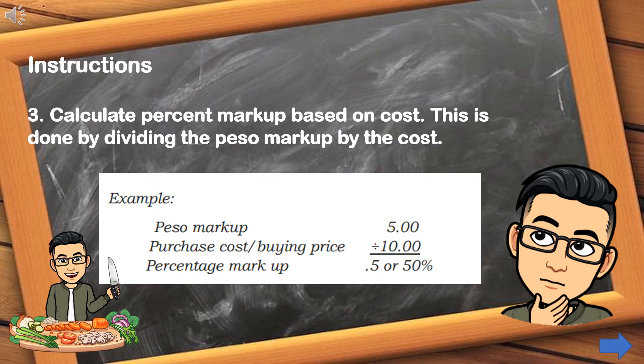Step number 3: Calculate percent markup based on cost. This is done by dividing the peso markup by the cost. For example: ₱5.00 ÷ ₱10.00 = 0.5, so the percentage markup is 50%.